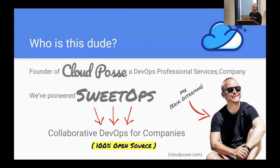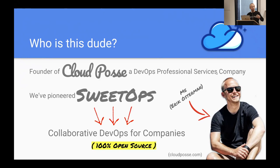I am the founder of Cloud Posse, a DevOps professional services company. We've pioneered a process we call SuiteOps, which is a collaborative form of DevOps that spans company boundaries, enabling everyone to work on the same platform to achieve a very nice infrastructure. Everything we do is 100% open source, so what we're talking about today is pulling from our library of open source available on our GitHub.